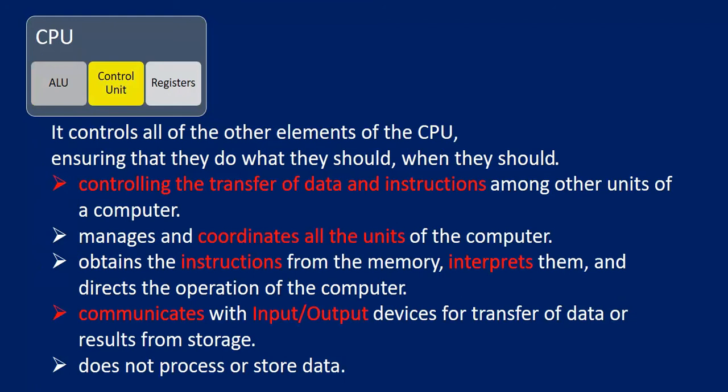The Control Unit mainly controls the other elements of the CPU — controlling the transfer of data and instructions among the other units of a computer. It manages and coordinates all units of a computer, obtains instructions from memory, interprets them, and directs the operation of the computer. It communicates with I/O devices for transfer of data and results from storage, but does not process any data itself — it only controls.